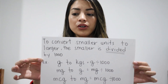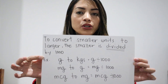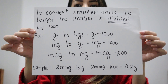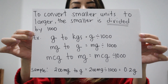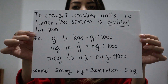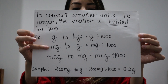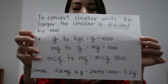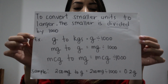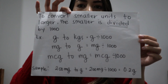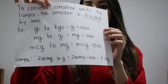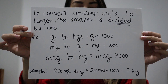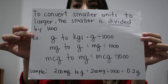If you convert smaller units to larger units, you need to divide by 1000. Gram to kilogram — divide by 1000. Milligram to gram — divide by 1000. Microgram to milligram — divide by 1000. For example, 200 milligrams converted to grams: 200 divided by 1000 gives you 0.2 grams.